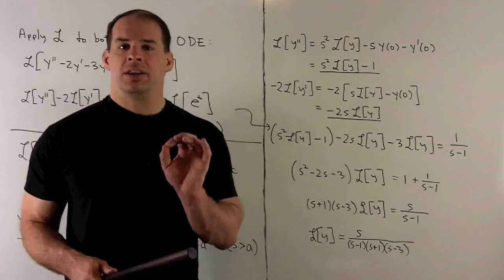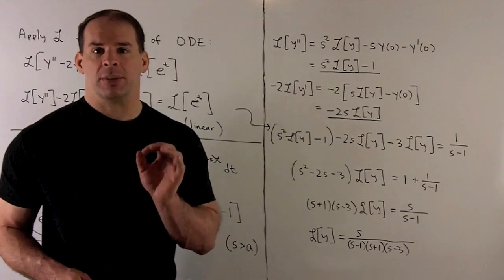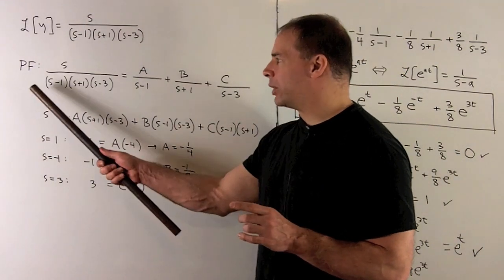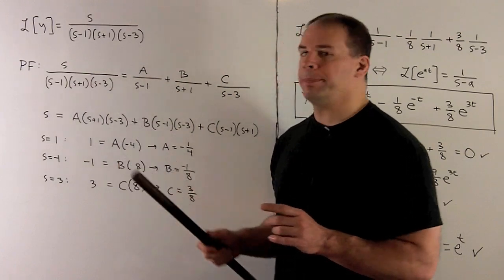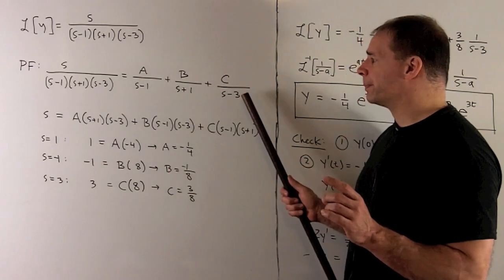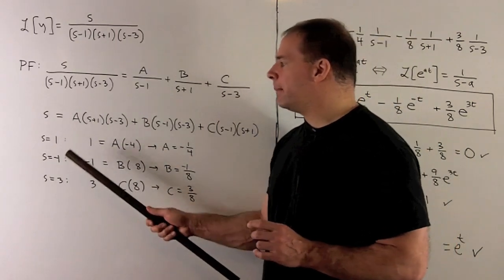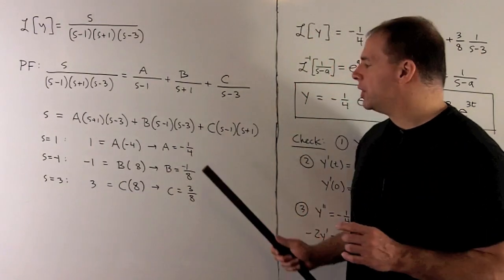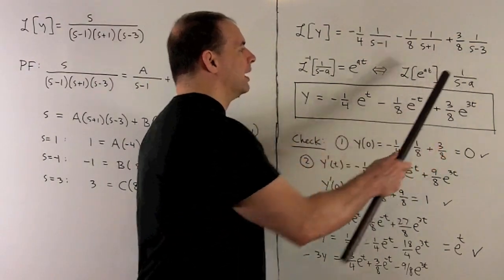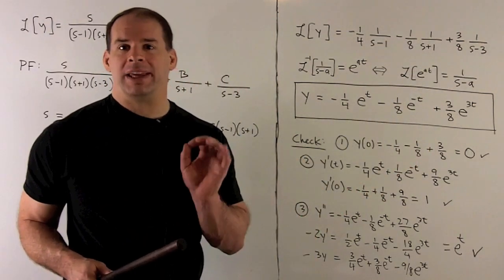This rational function is not in our table of Laplace transforms, so we perform a partial fraction expansion. Since we have only linear factors each with exponent one, we write one term per factor, clear the denominators, and target the zeros of the denominators by substituting s equals 1, minus 1, and 3 to directly read off the coefficients.